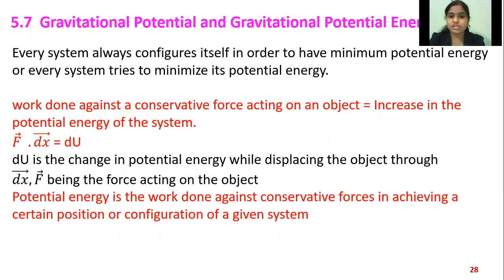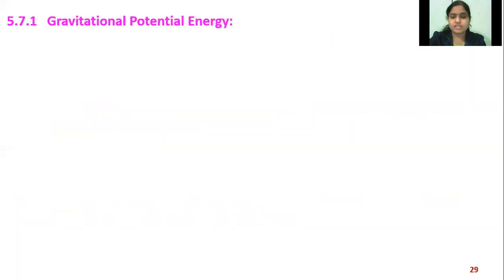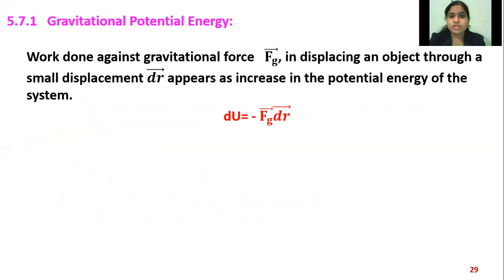Potential energy is the work done against conservative forces in achieving a certain position or configuration of the system. Work done against a conservative force is called potential energy. For gravitational potential energy, it is the work done against gravitational force — represented as vector Fg — in displacing an object through a small displacement vector dr.